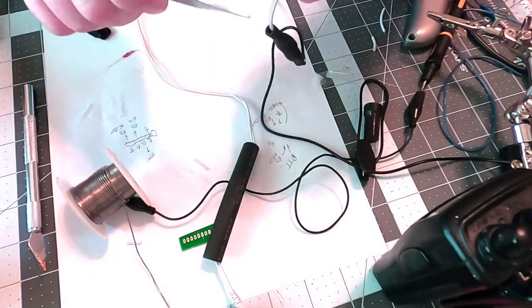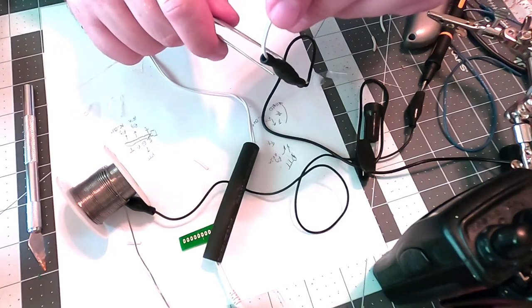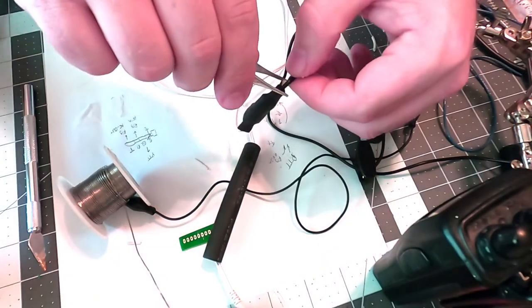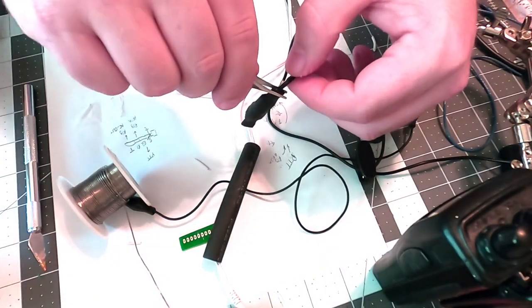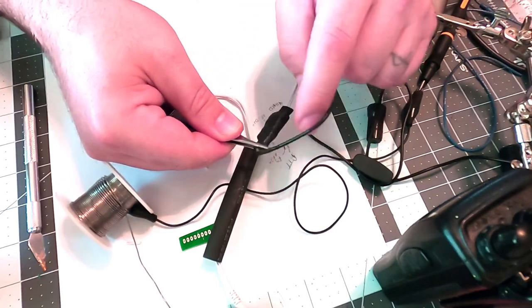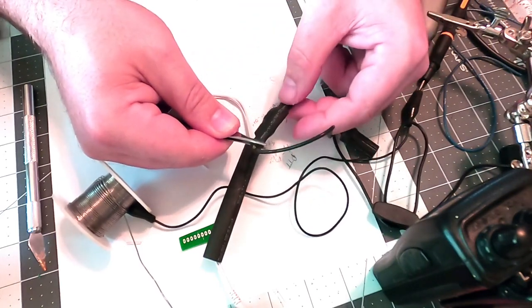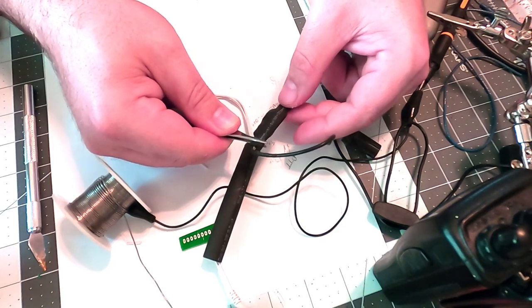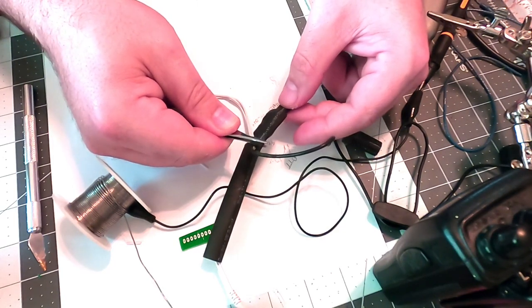So let's go ahead and put the heat shrink. And what I'm going to do is take this and pinch the end shut and hold it. There's glue inside the heat shrink as well. So that should provide us with a modest amount of strain relief along this connection.